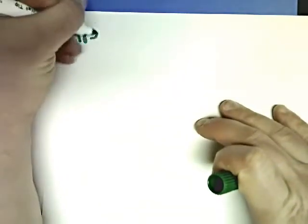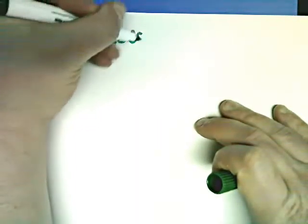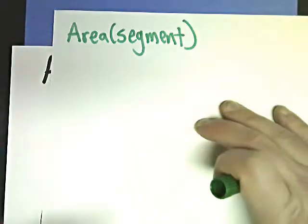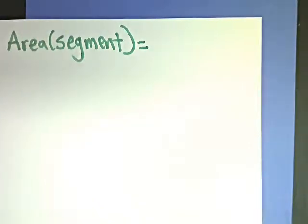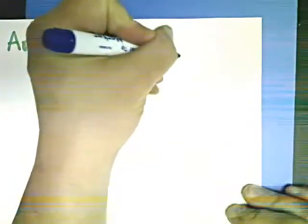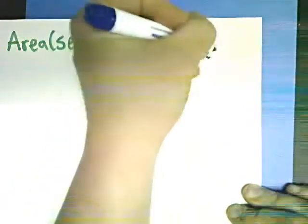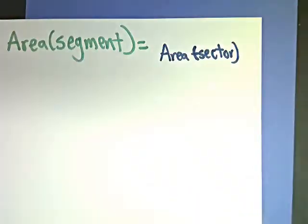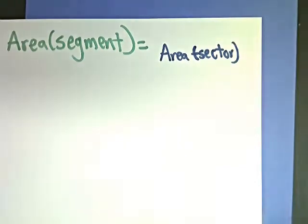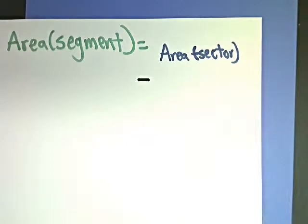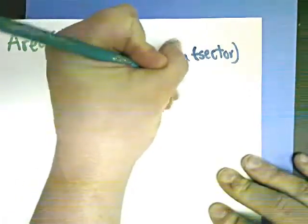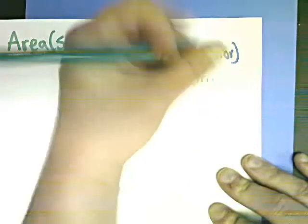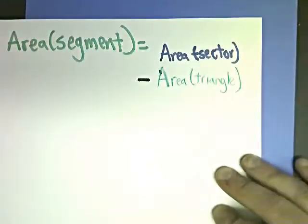So if I'm going to do area of the segment, what I'm going to do is take the area of the sector, which is the slice of circle, and from there I'm going to subtract, and I'm writing it straight up and down just because of paper. I don't really expect you to do it this way. The area of the triangle created by the chord and the central angle.